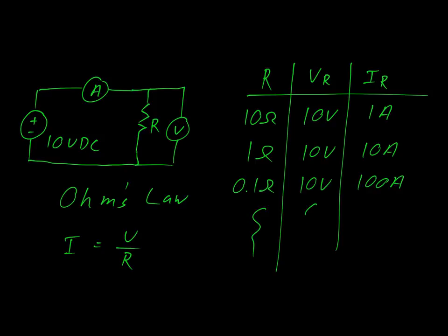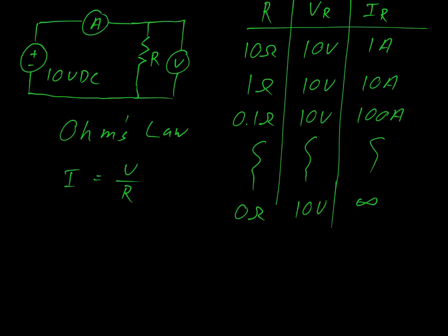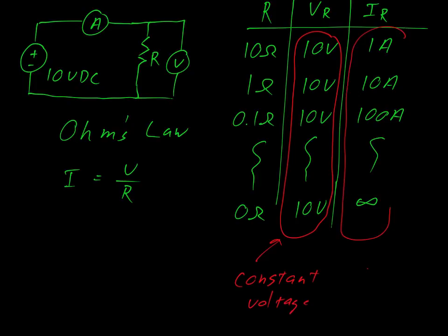In fact, we could continue this as long as we wanted and eventually reach a point where there's zero resistance. The voltage across this is 10 volts and the current through has gone to infinity. Again, this is a concept. You can't actually build one of these. One thing I'd like to draw your attention to is this column. We see that no matter what has happened, we have constant voltage. And in this column, you see that the current has done whatever is necessary in order to keep that voltage constant.